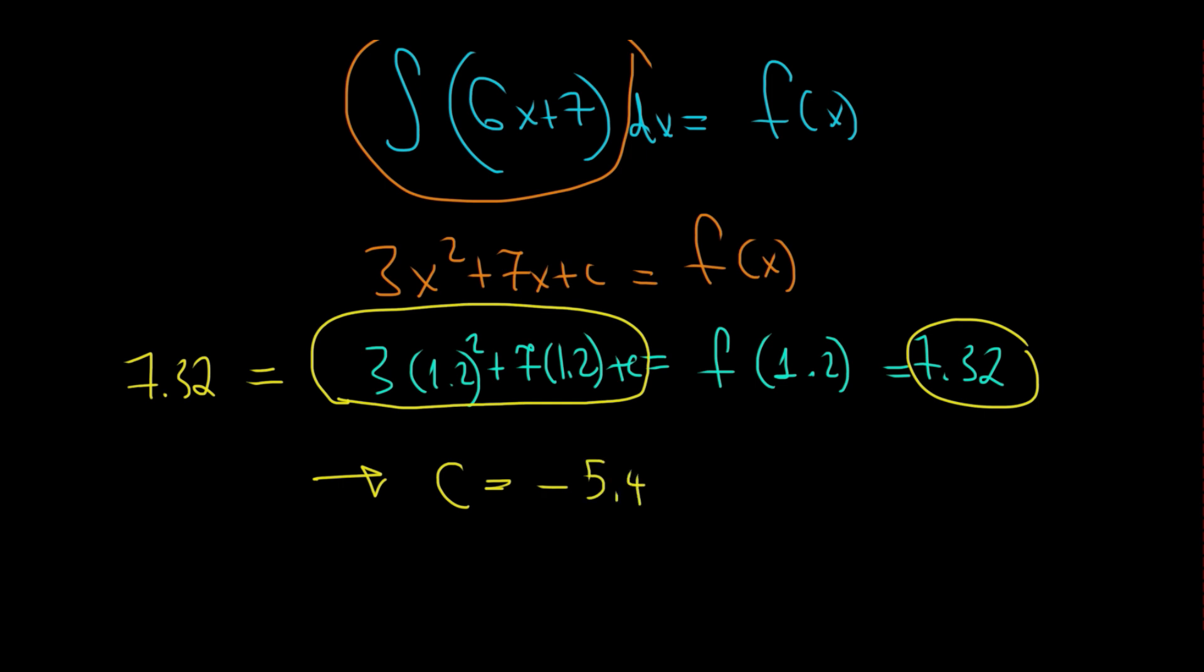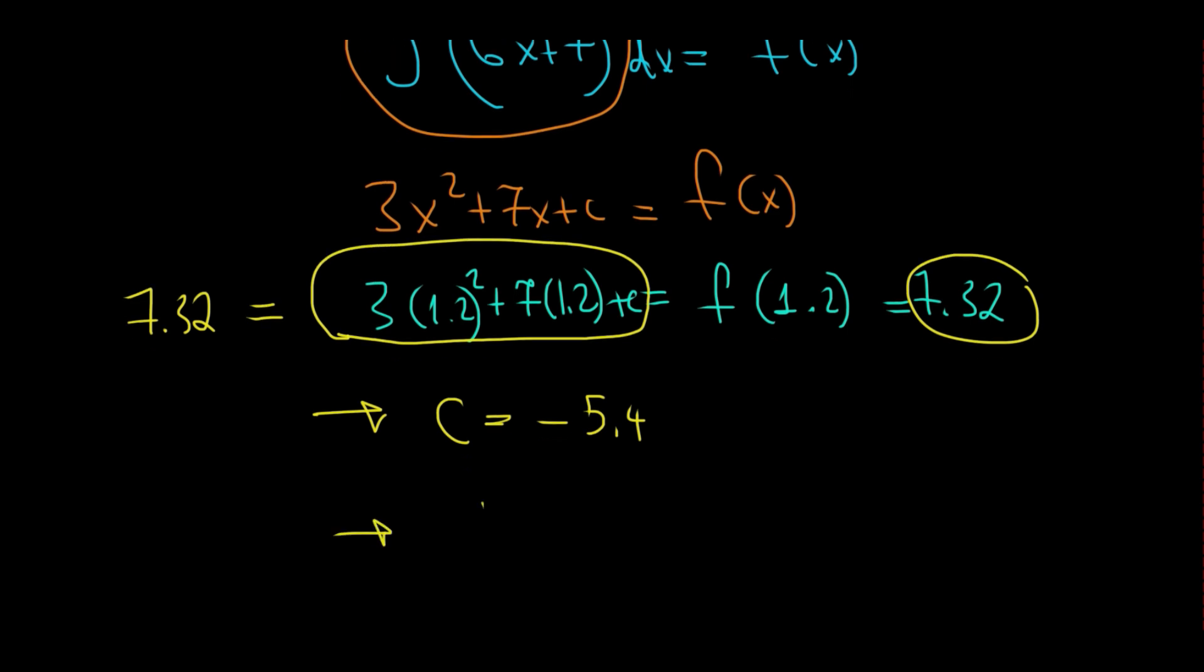I repeat one more time, the fastest way to solve equations is to use numerical solve on your graphic calculator. And in conclusion, I can find the original function f of x, which is equal to 3x squared plus 7x plus, instead of c, I'm just gonna write minus 5.4. And this concludes the answer.